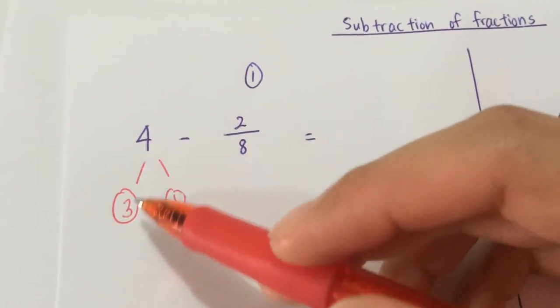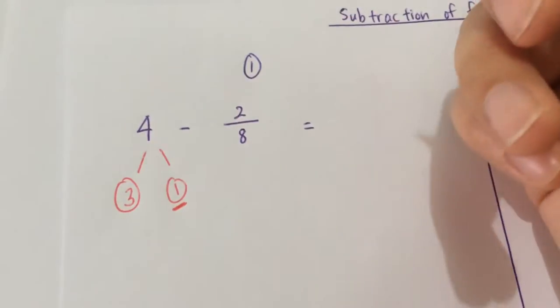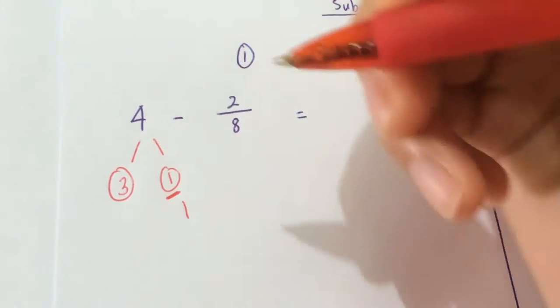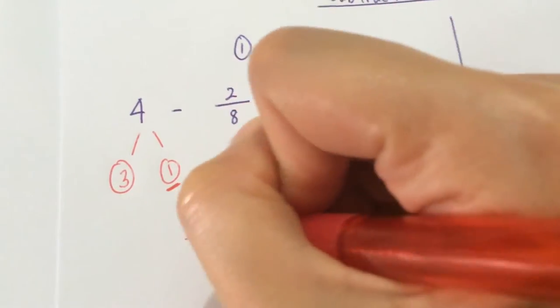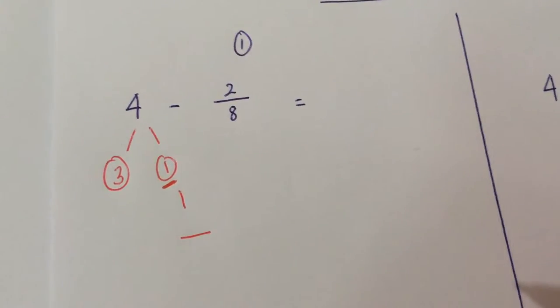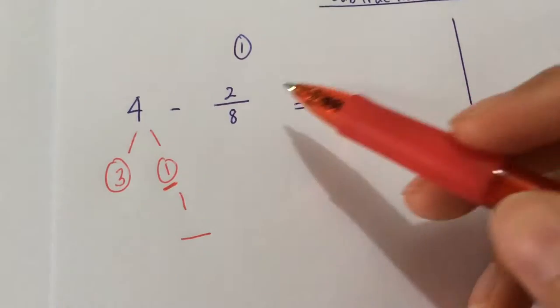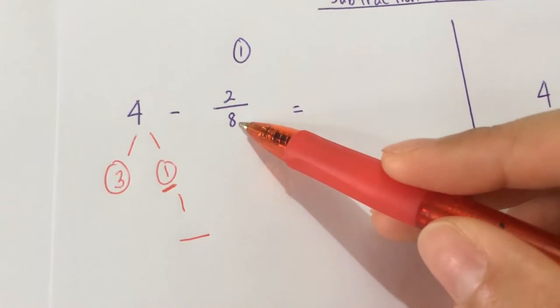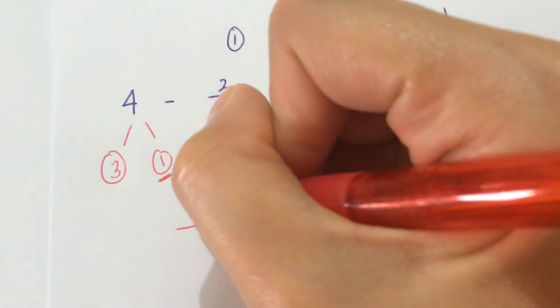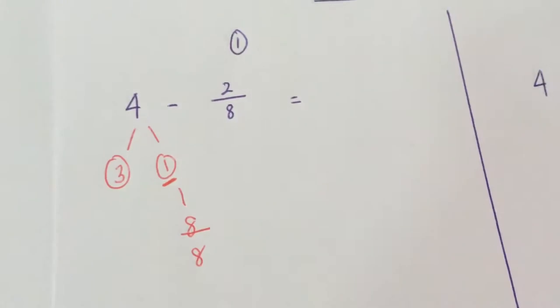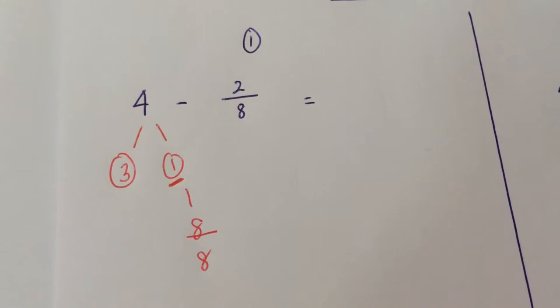Now once you split 4 into 3 and 1, I'm going to make this 1 whole a fraction. What is 1 whole as a fraction? Well it can be 2 out of 2 or 3 out of 3 or 4 out of 4. But in this case, because the denominator is 8, so I'm going to make my fraction 8 out of 8.